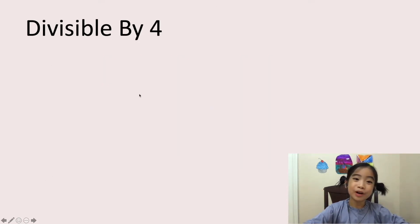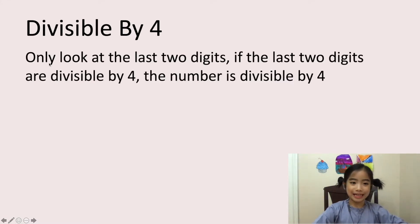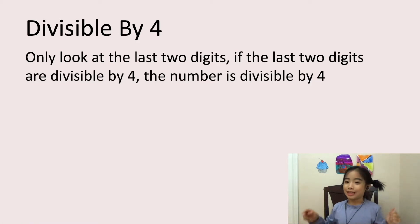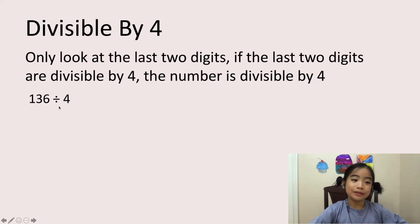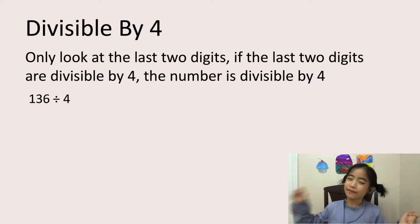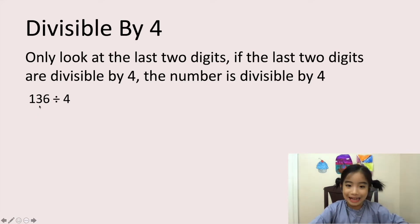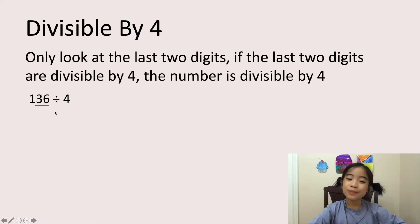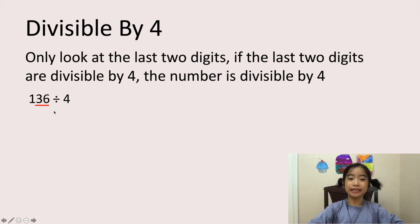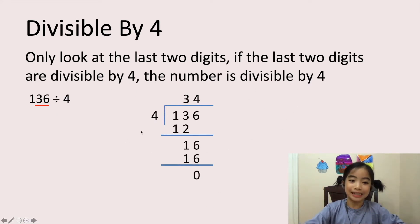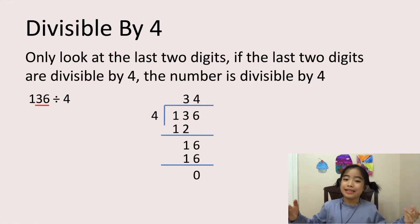Now let's look at divisible by 4. The rule is, only look at the last two digits. If the last two digits are divisible by 4, the number is divisible by 4. Let's look at my example. Is 136 divisible by 4? Well, let's look at the last two digits, which is 36. 36 is divisible by 4, because 4 times 9 equals 36. So 136 is divisible by 4. Here is my long division, and I'll let you figure out if my long division is correct.